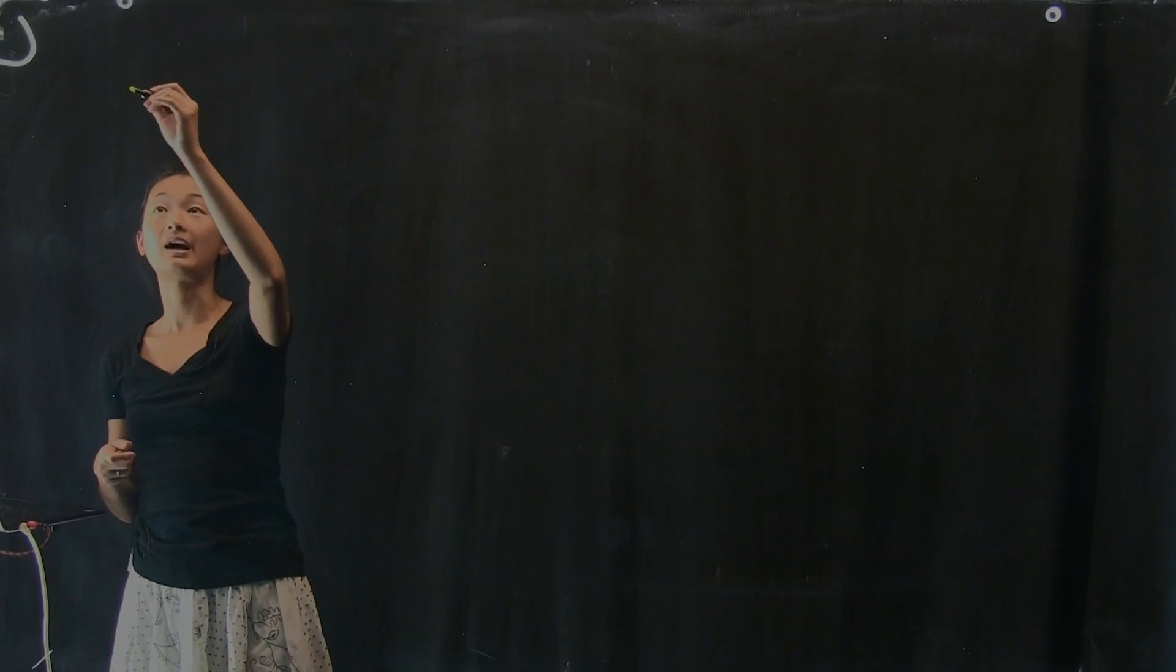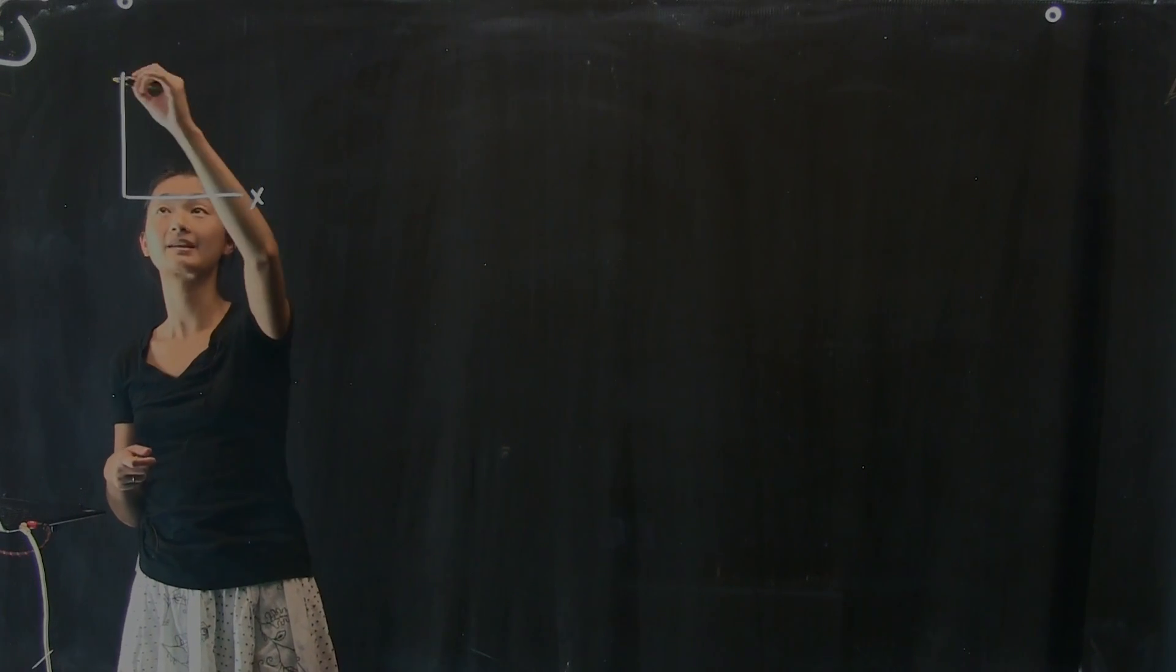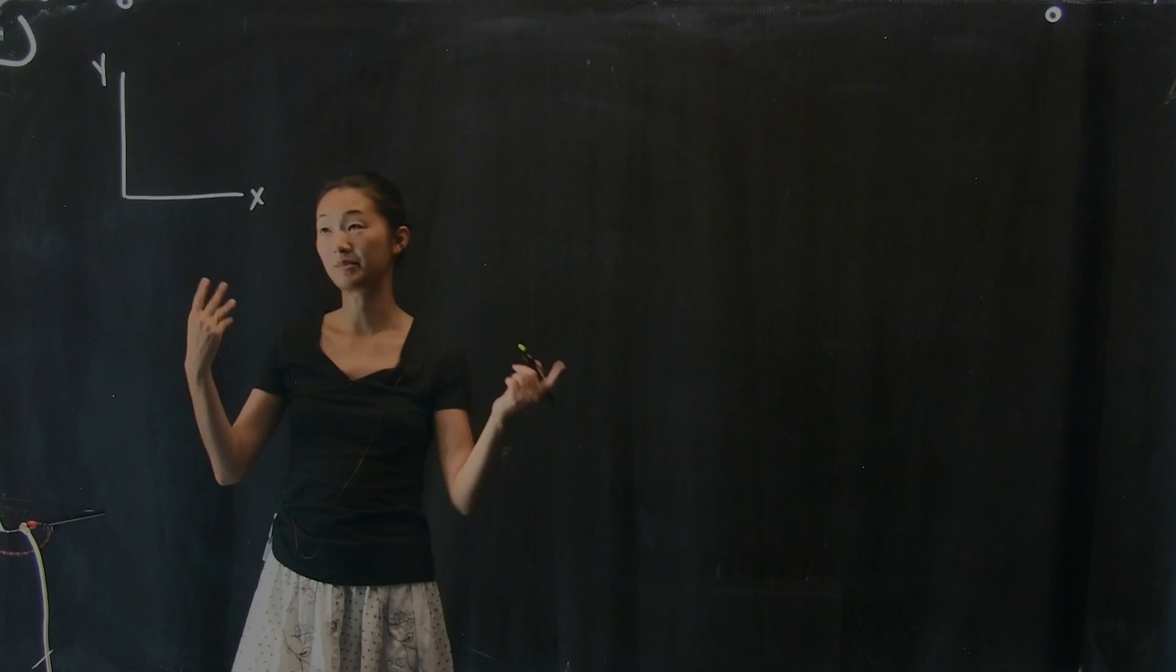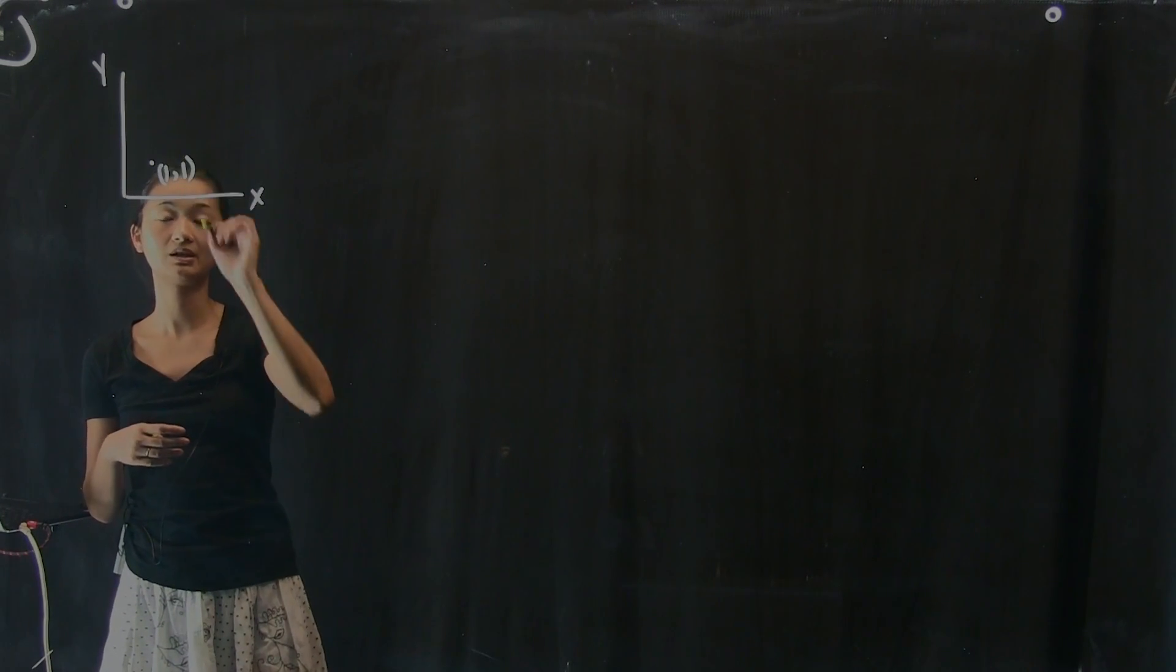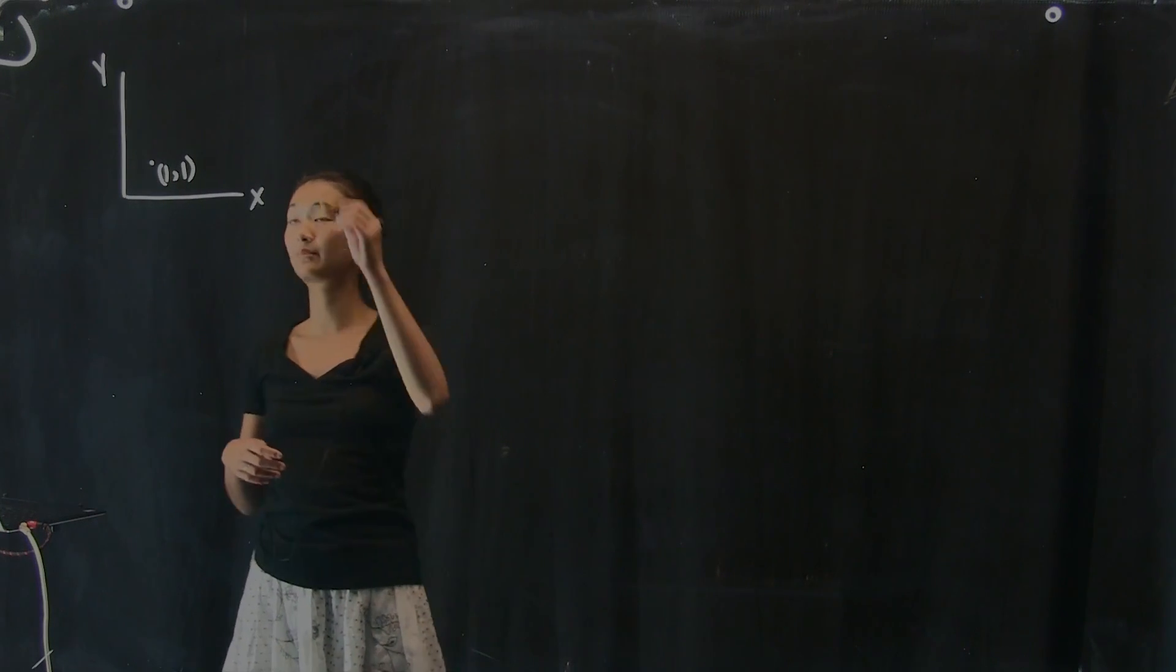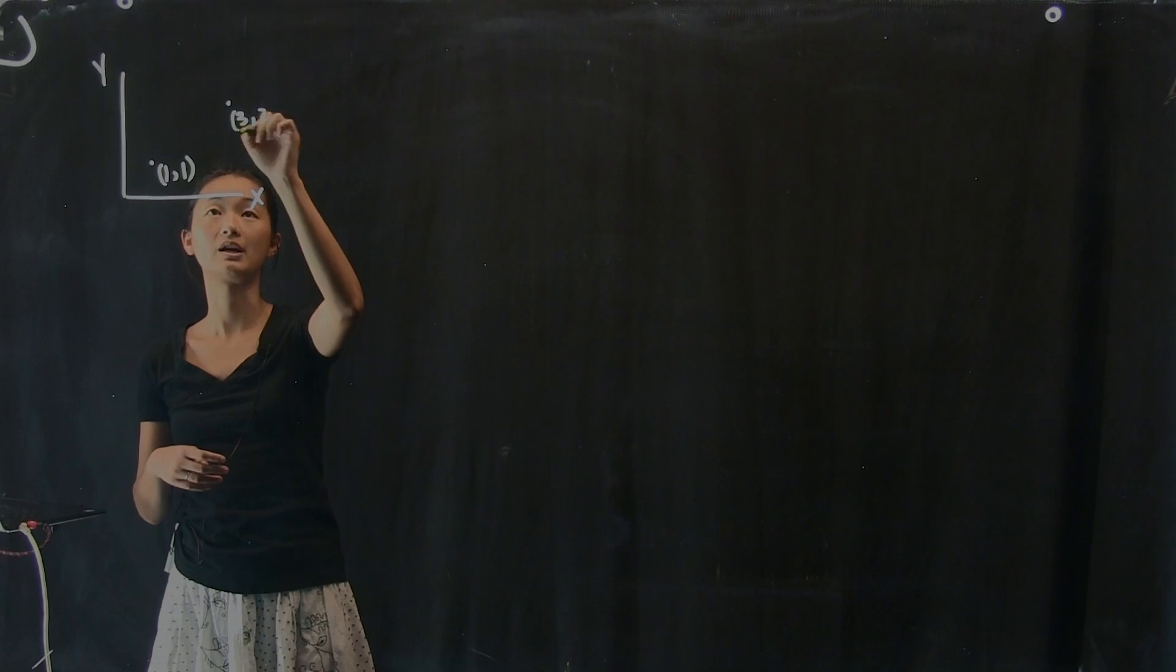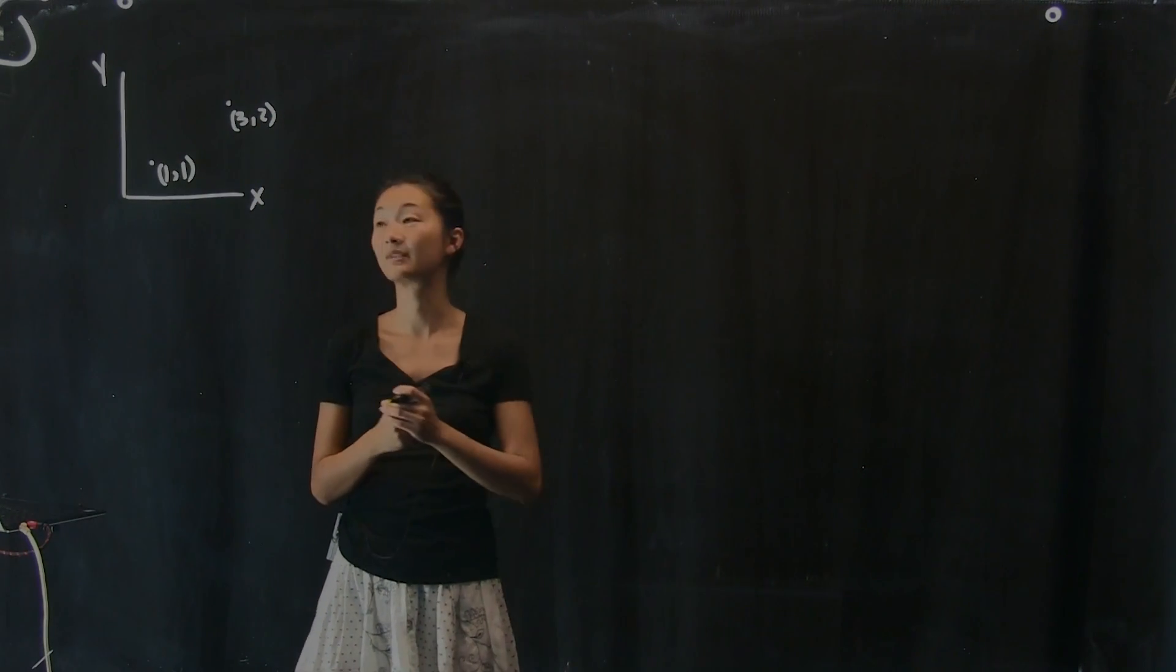So, let's say that we have a plane, and here's my x-axis and here's my y-axis, and I have two points. Let me just make them up. Let's say I have a point at x equals 1 and y equals 1, and I have another point over here at x equals 3 and y equals 2. And my goal is very simple.